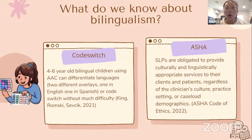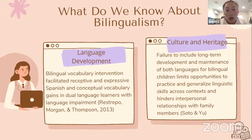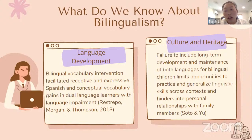What do we know about bilingualism from the research? Bilingual Spanish children as young as four to six years old are able to code switch and can discriminate and recognize different language AAC layouts. ASHA obligates us to provide culturally and linguistically appropriate services regardless of our own culture, practice setting, or caseload demographics. Dual language learners with language impairment who receive bilingual vocabulary intervention will improve receptive and expressive language in both languages. Facilitating bilingualism opens opportunities to practice and generalize linguistic skills across contexts, improve interpersonal relationships with family members, and preserves a client's culture.